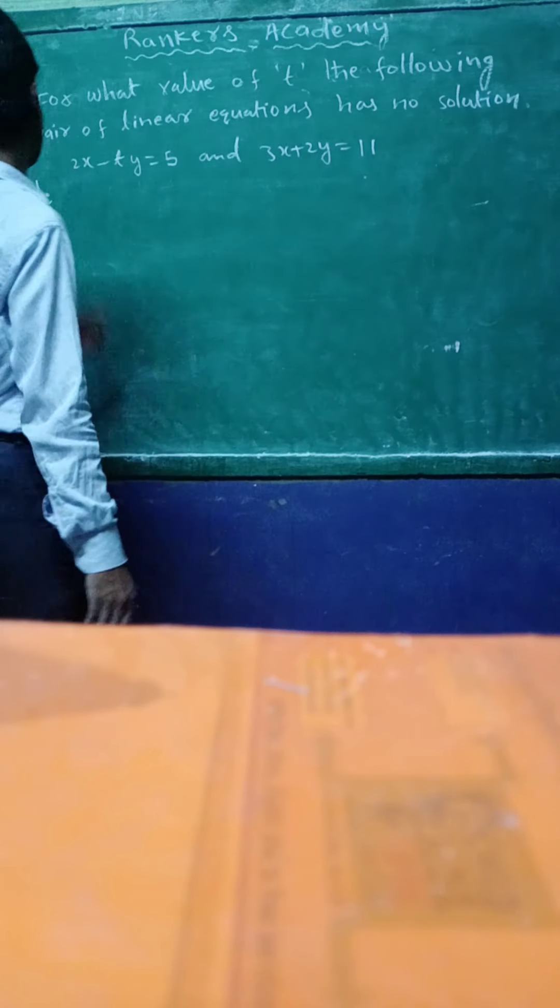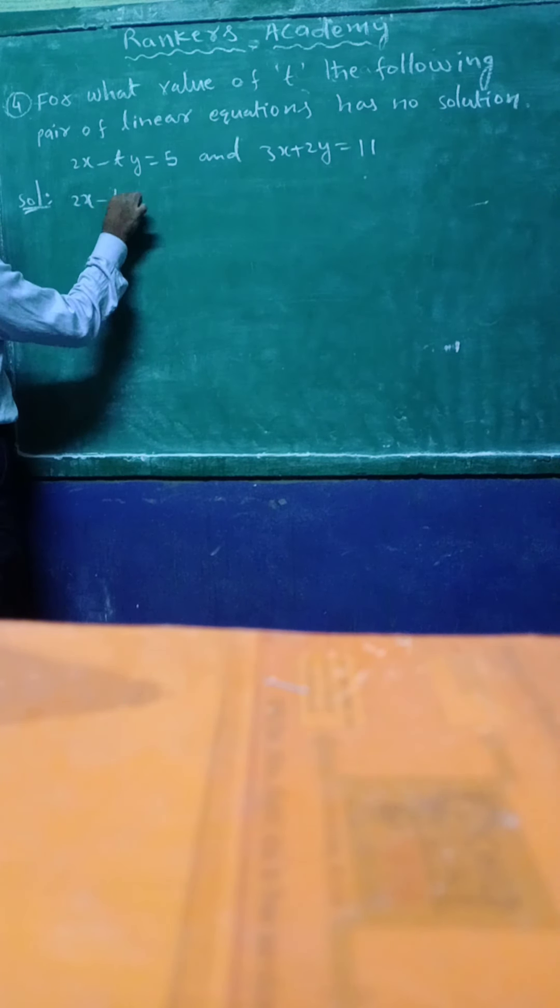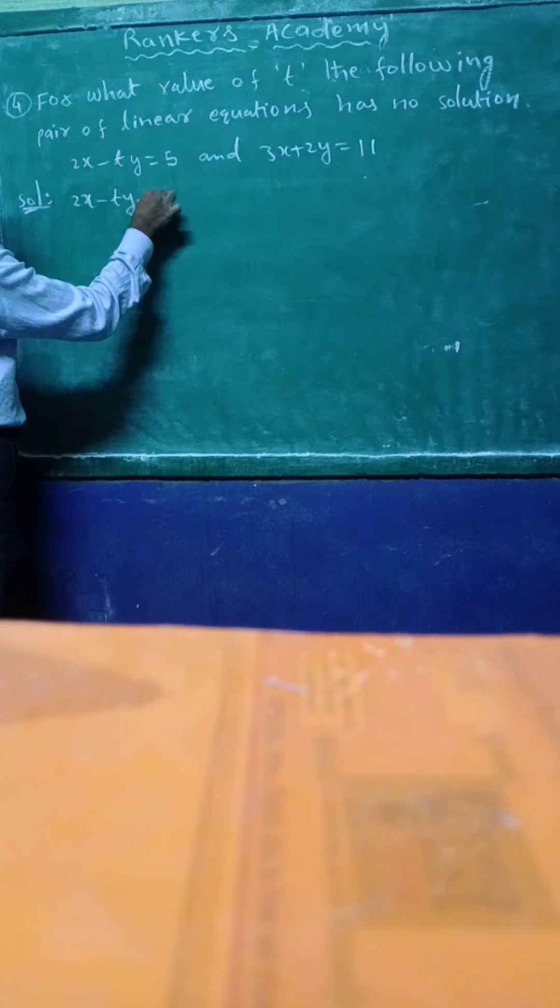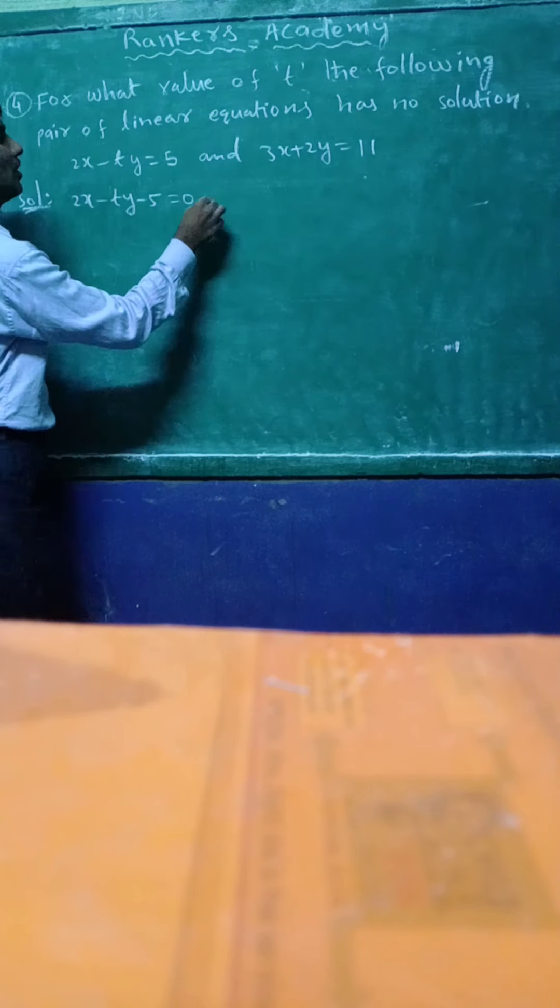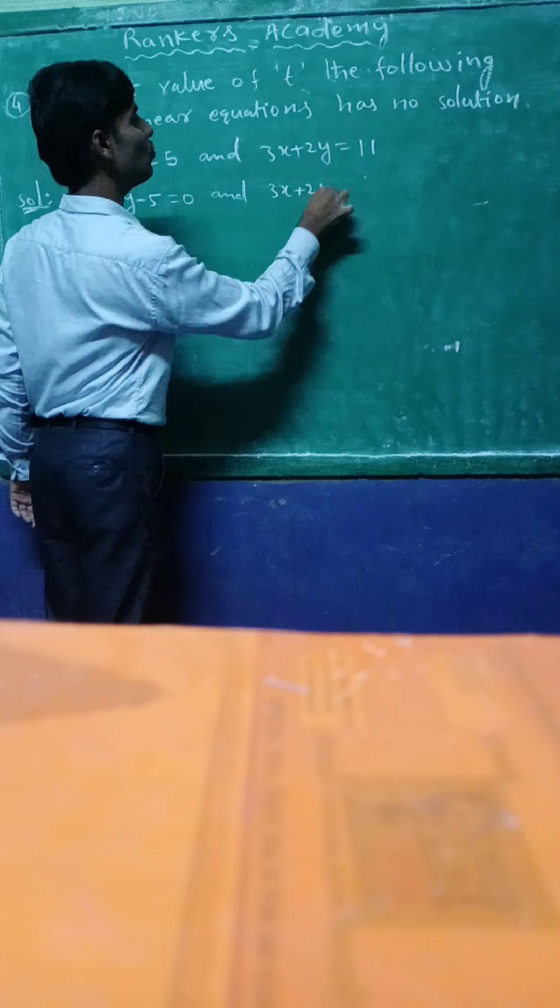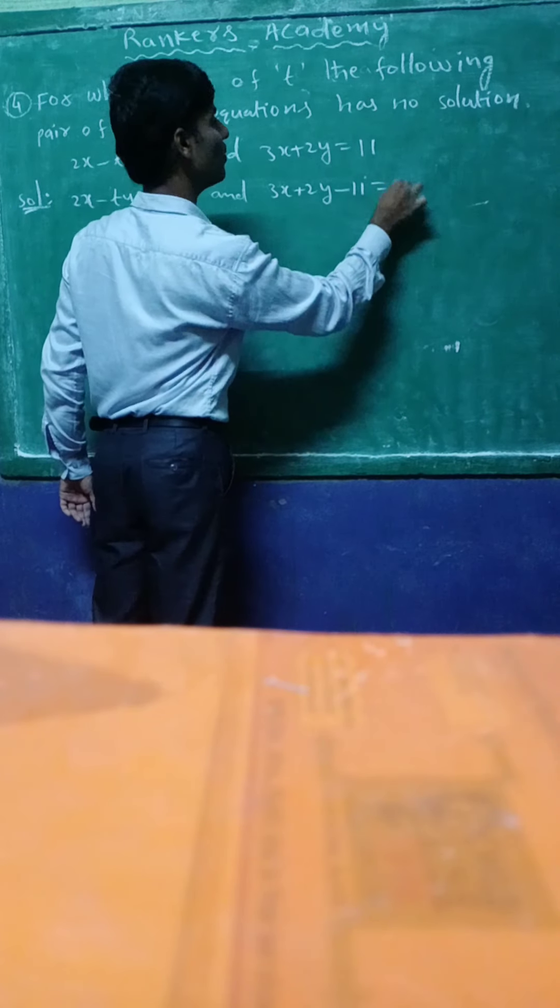So the equations we write here: 2x minus ty, rearranging means it becomes 2x minus y equal to 0. And here also 3x plus 2y, rearranging means it becomes 3x plus 2y minus 7 equal to 0.